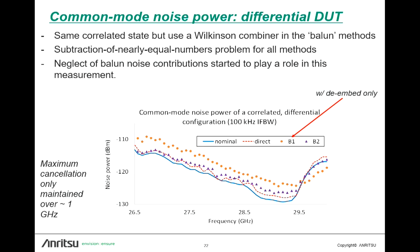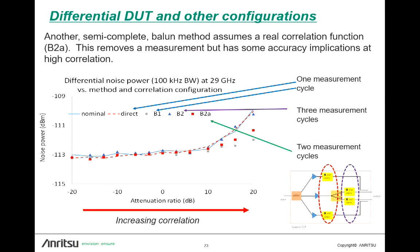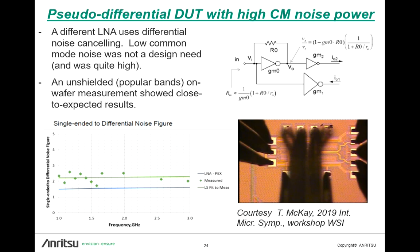A slightly different experiment: we changed the attenuation ratio, essentially changing the correlation as we move along the x-axis. The direct and the complete balun again track the nominal reasonably well over that span. We also introduced another method — B2A — which is that simplified balun method in the middle where we assumed the correlations were real. As you would expect, that's somewhere in between in terms of agreement as you get to higher levels of correlation.